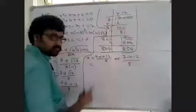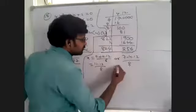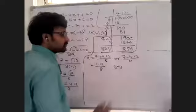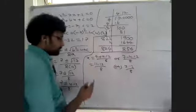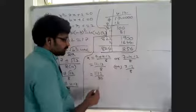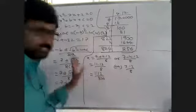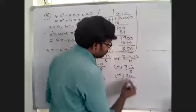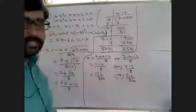For the first value: 7 plus 4.12 equals 11.12, divided by 8. For the second value: 7 minus 4.12 equals 2.88, divided by 8. To remove the decimal, multiply and divide by 100, giving 1112 over 800 and 288 over 800.